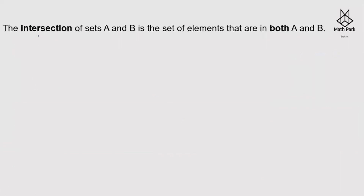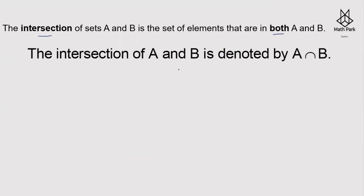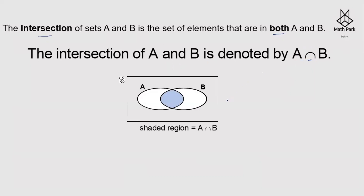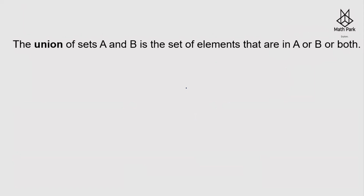Now let us understand intersection of sets A and B. The intersection of sets A and B is the set of elements which are common to both A and B. It is denoted by A∩B. The shaded region shows A∩B — the region common to both A and B. Please remember this, as you will solve a question at the end.